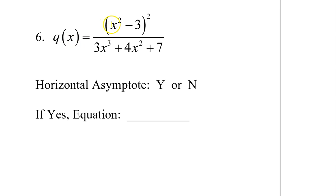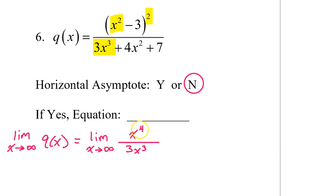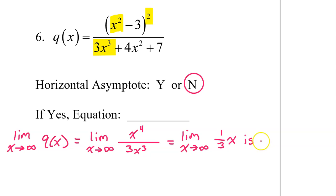Number 6. To understand the degree of the numerator of q of x, look at the leading term and the exponent. In the denominator, of course, we have the leading term 3x to the third power. When the degree of the numerator is greater than the denominator, there will be no horizontal asymptote. This expression simplifies down to one-third x. As x approaches infinity, this expression just gets bigger and bigger. So this limit is infinity, thus no horizontal asymptote. There is a slant asymptote parallel to y equals one-third x.